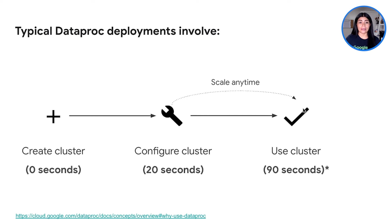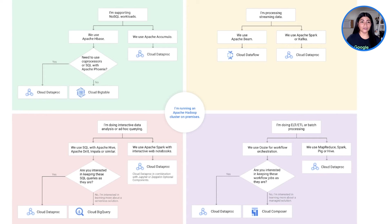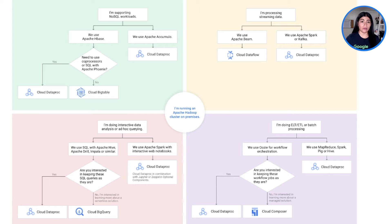Cloud Dataproc provides built-in support for Hadoop, managed hardware and configuration, simplified version management, and flexible job configuration. When you're running an Apache Hadoop cluster on-premises, you have many options available in Google Cloud to satisfy all your needs. For example, for processing streaming data, if you use Apache Spark or Kafka, we recommend Cloud Dataproc, while if you use Apache Beam, we recommend Cloud Dataflow. There are other scenarios in this slide to help you make an informed decision of which products to use and when.